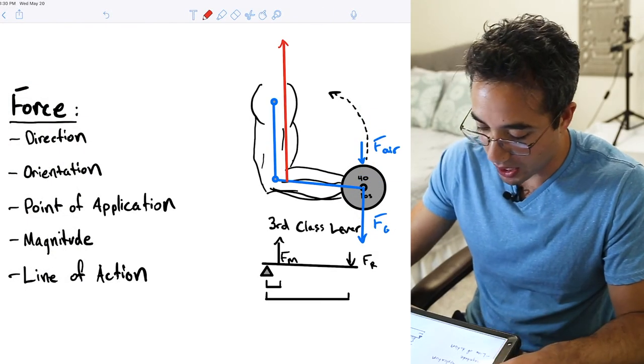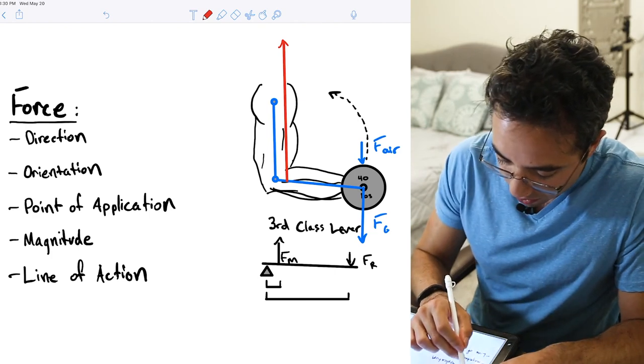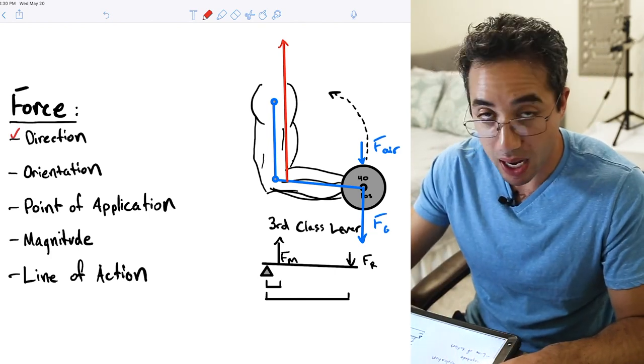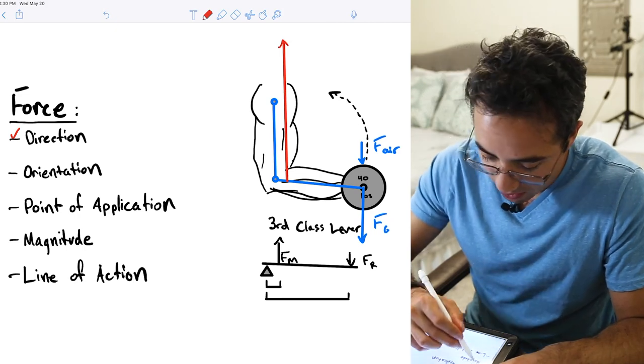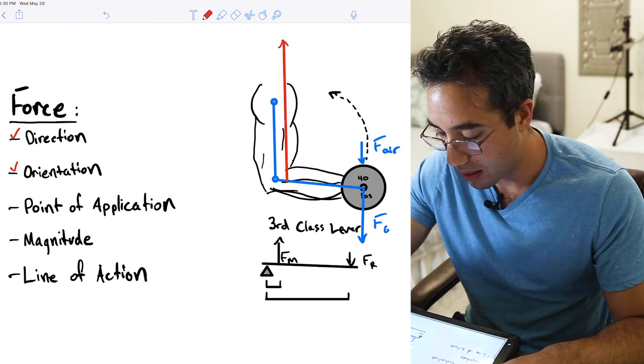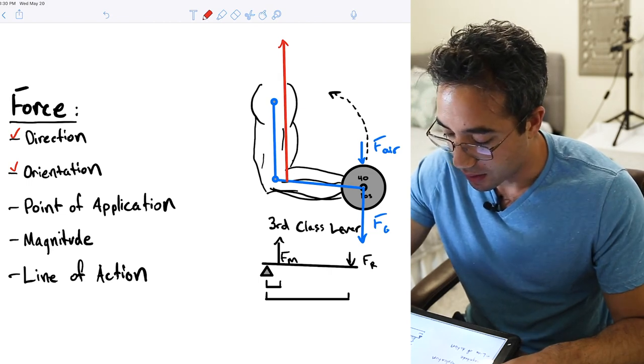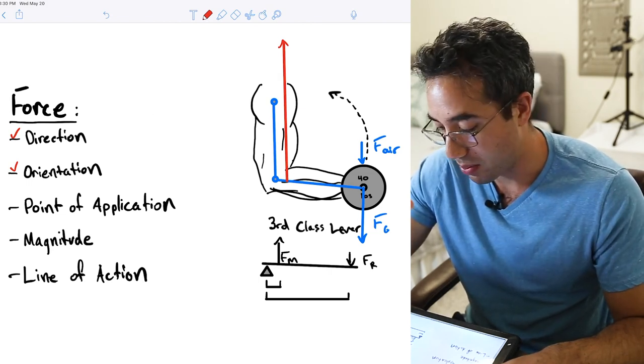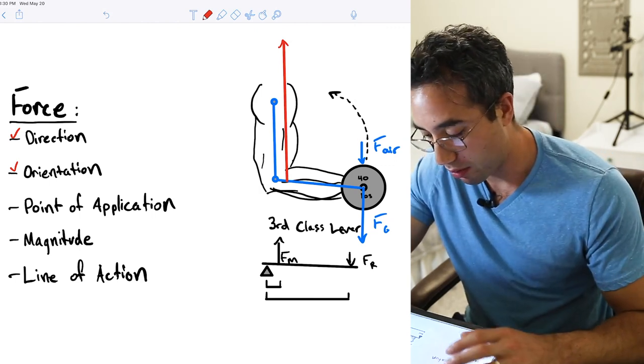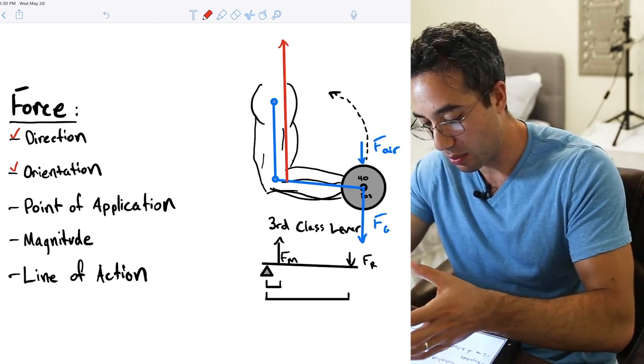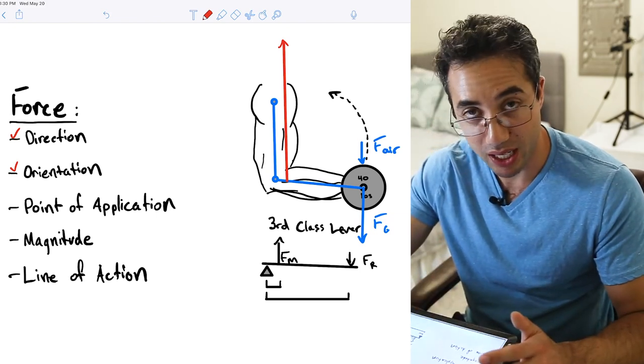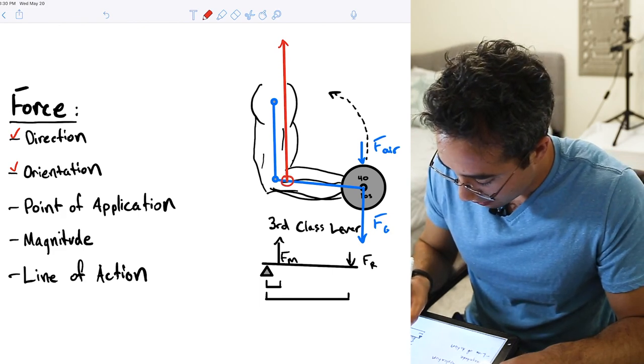Okay so the force of your biceps brachii has a direction it is pulling straight up it has an orientation so it's going in the positive y direction and that orientation now it depends on our frame of reference right. If we're thinking of this from a somatic frame of reference or maybe it's a global frame of reference it's going to differ but from a somatic frame of reference where our system is this arm it's going to be in a positive y direction.